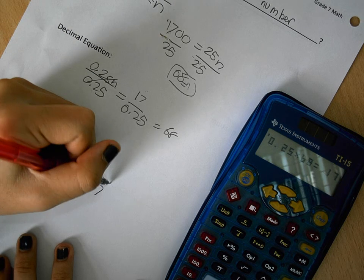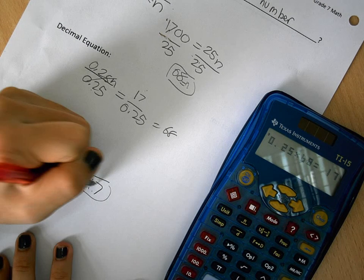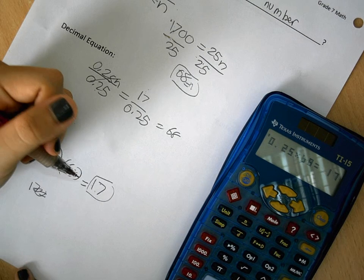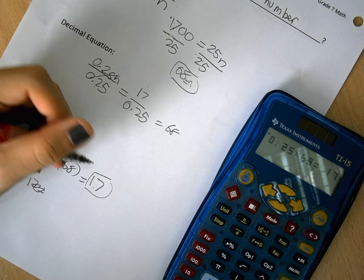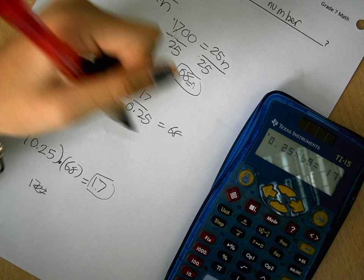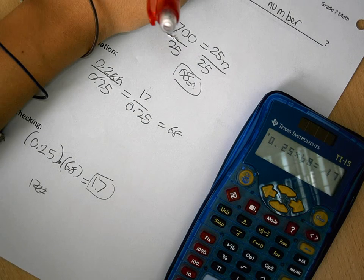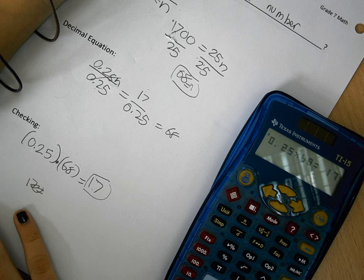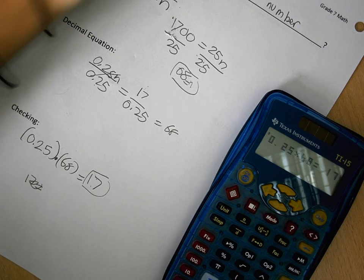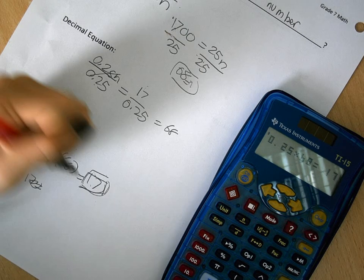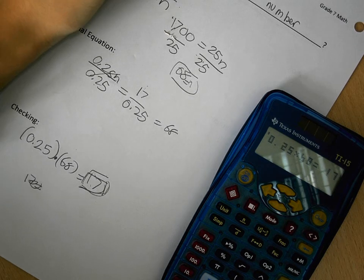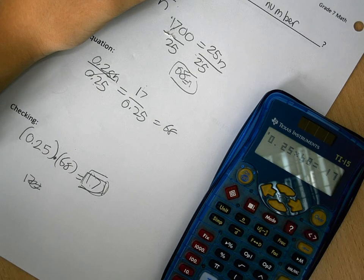So now you know that your answer is correct, because it equals to 17, so 17 is 25% of 68.